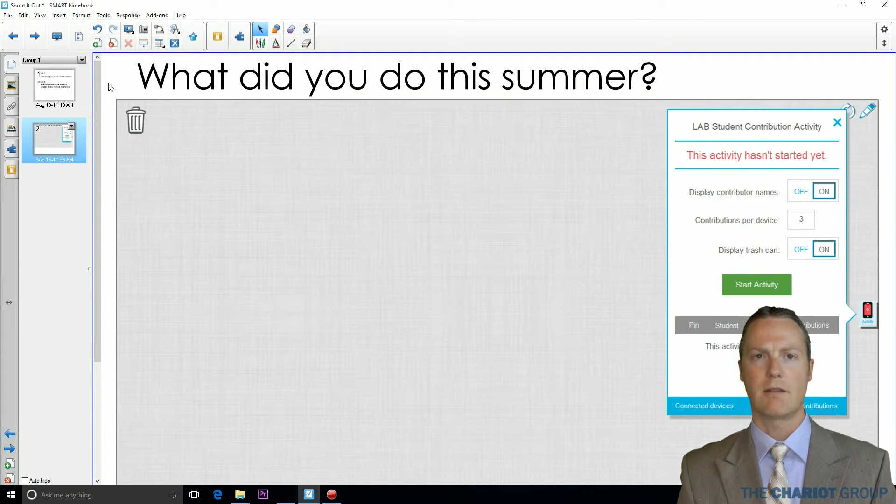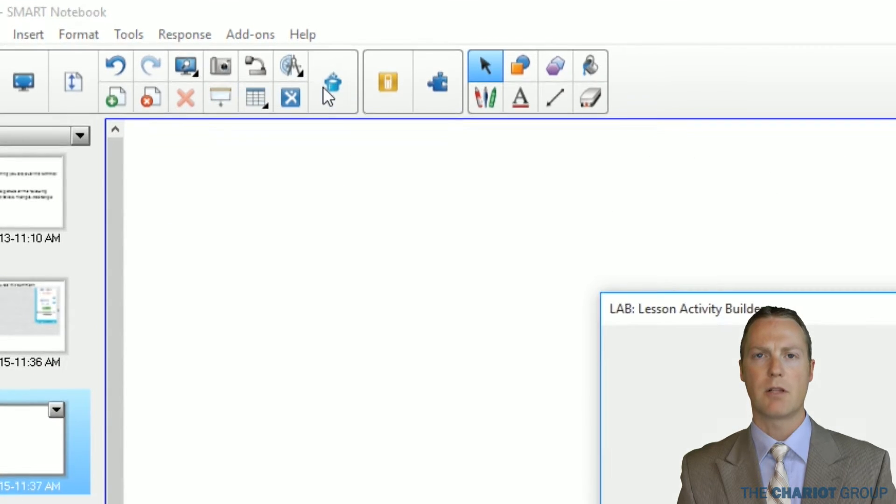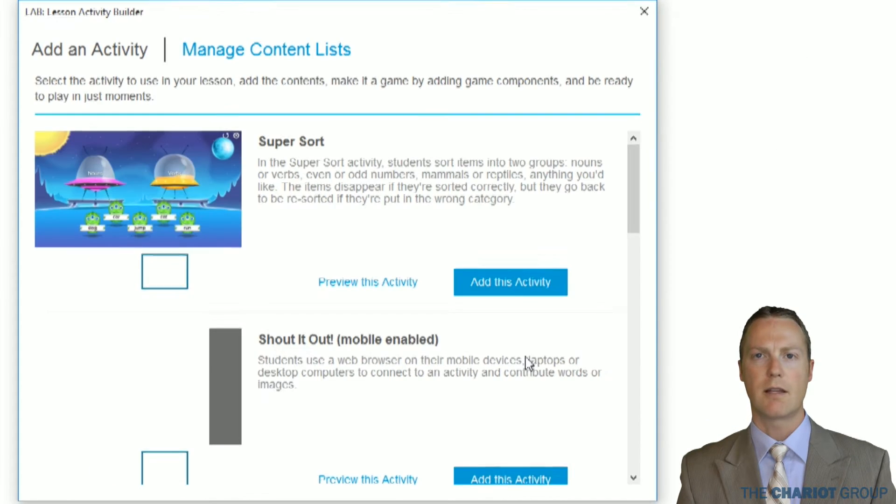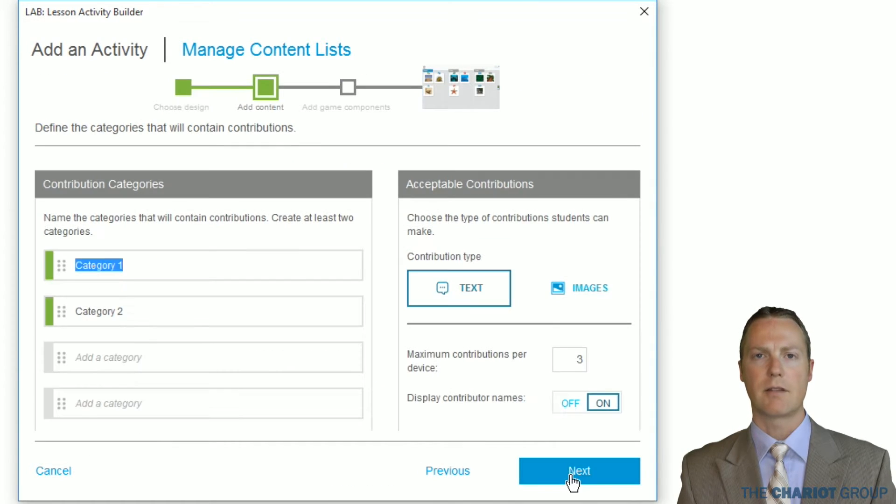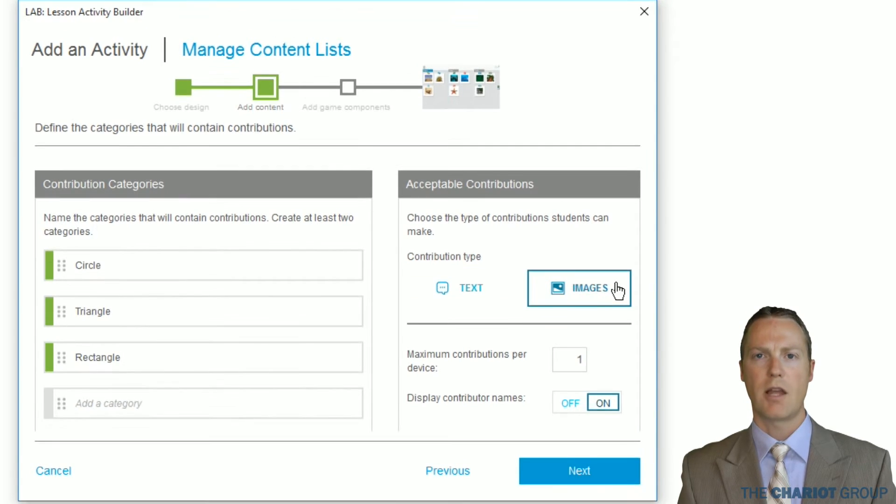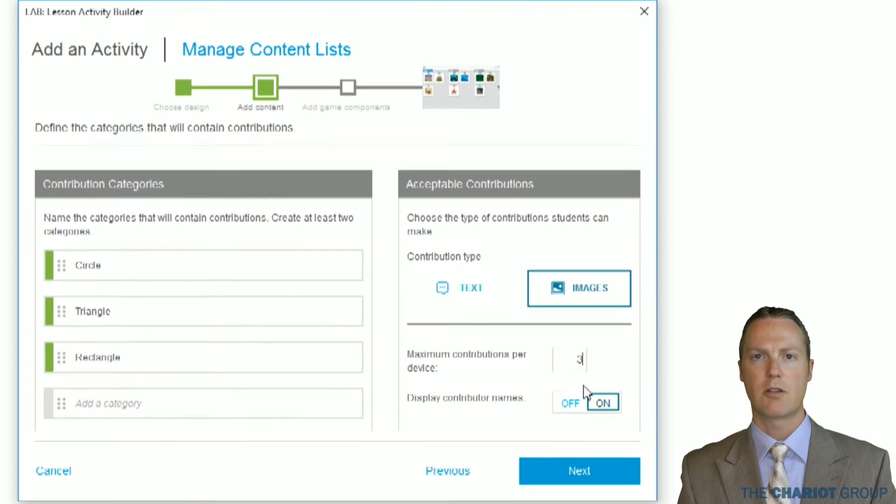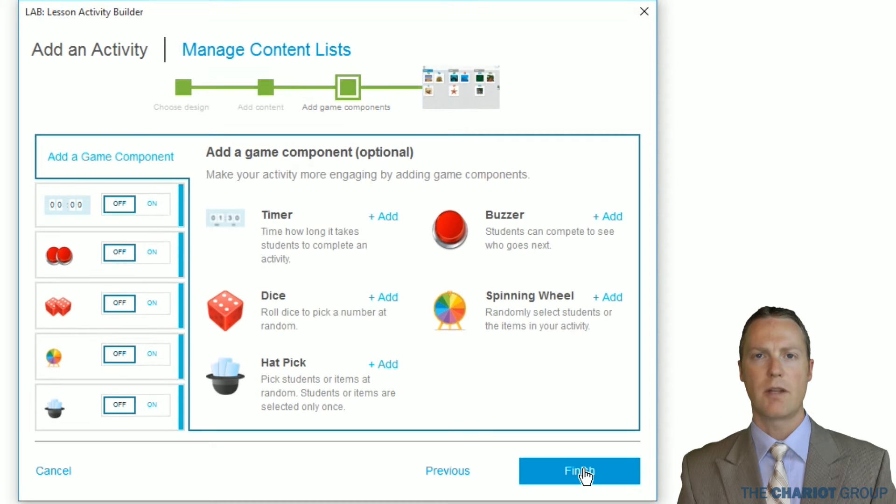Let's create our second activity. So we will create a new page and then click on Lesson Activity Builder, find Shout It Out, then click Add This Activity. This time we will choose Categorized and then click Next. Here we will add our categories, which will be circle, triangle, and rectangle. We will then change the contribution type to images and then change the maximum contributions per device to 3. Then click Next. We aren't going to add any game components, so we will then click Finish.